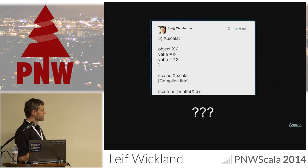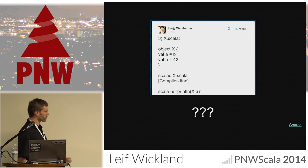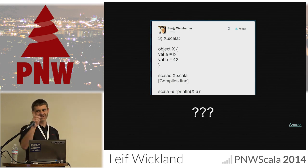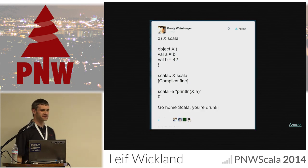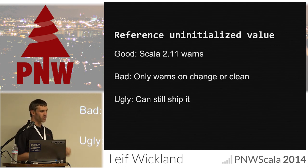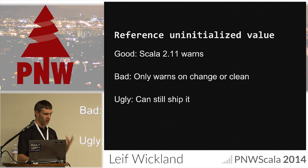Here's somebody complaining about Scala: we've got an object, we've initialized A to B, we've initialized B to 42, and then we print X.A. What does it print? Zero. In Scala 2.11, the compiler will warn you when you've done this. But you only see warnings when you change the file that has that bad thing in it, or you're doing a clean build — which means you can still ship that bug that's going to blow up later.